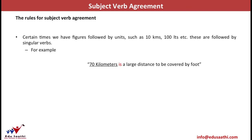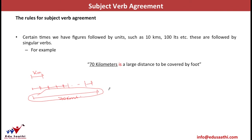When the subject involves units of measurement — such as 10 kilometers, 100 meters — the verb is singular, because the quantity is viewed as a single entity. For example, '70 kilometers is a long distance,' or '80 rupees is a big sum.' Even though these are numerically large, they are considered as one collective measurement.